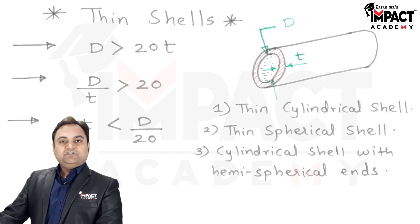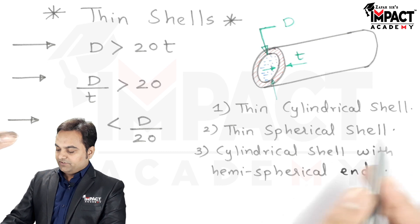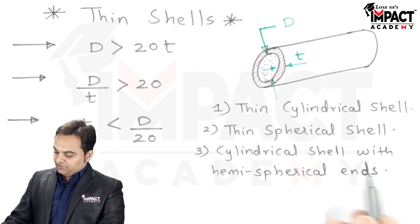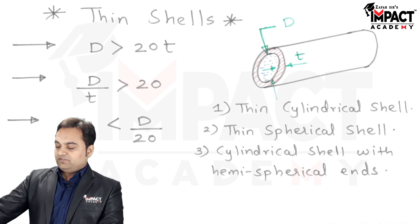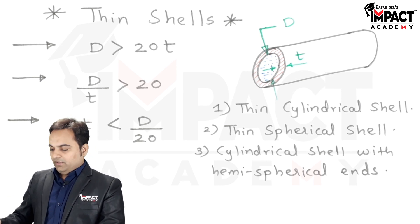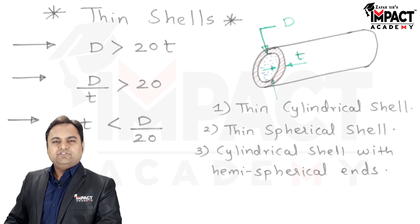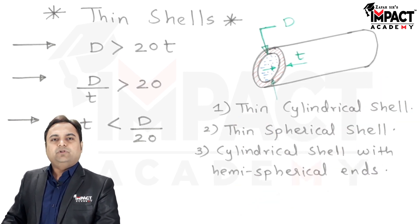Basically when we talk about thin shells, these are the three kinds: thin cylindrical, thin spherical, and cylindrical shell with hemispherical ends. Now, these thin shell pressure vessels are, for example, cylinders like LPG cylinder which is used to store LPG. That is an example of a thin cylinder.